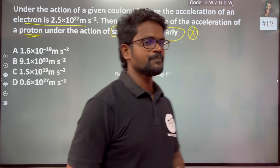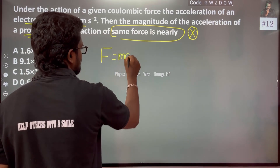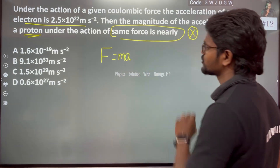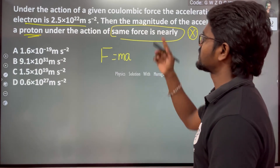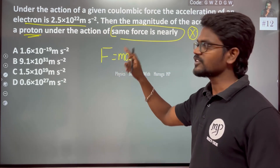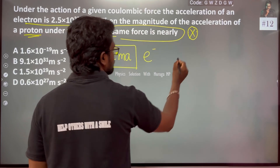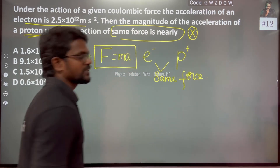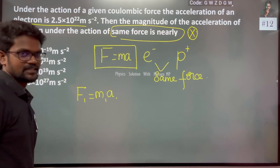This is very simple. From Newton's second law, F = mass × acceleration. Since they have given the same force acting on both, we use F = ma for each particle. The acceleration follows directly from this formula.